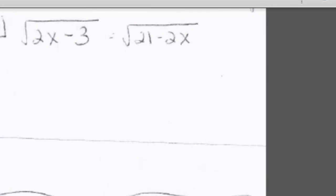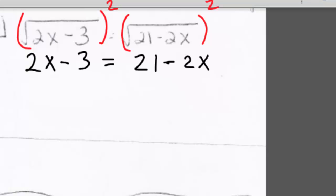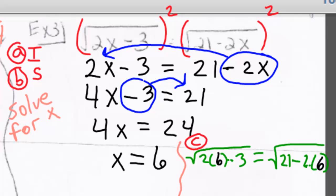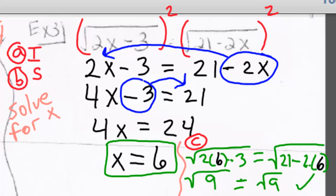Example 3. Notice there is a radical on each side of the equal sign — it is considered isolated, so we go to step 2 and square both sides. At this point we have a linear equation and we solve for the variable, giving us x equals 6. We check by plugging into the original equation and get the square root of 9 equals the square root of 9. This is a true statement, therefore x equals 6 is the answer.